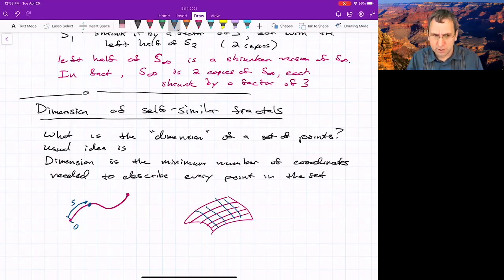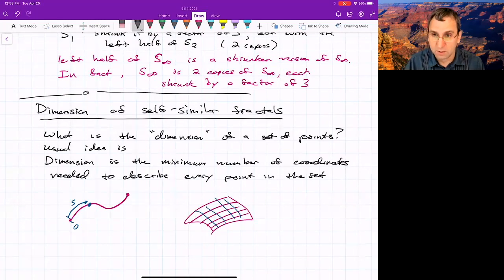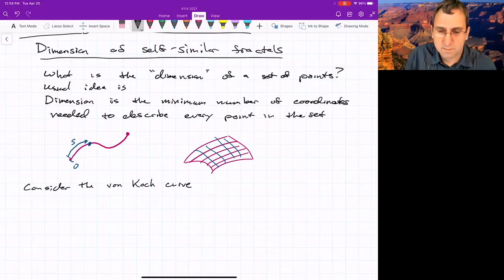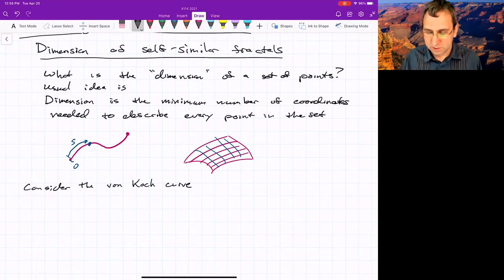But when we try to apply this to fractals, we run into paradoxes. So one good example is this thing called the von Koch curve, or just the Koch curve. Let's see there. The von Koch curve. It's a cool construction, probably easier to understand than the Cantor set.